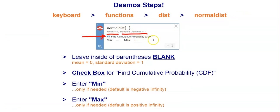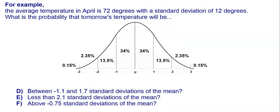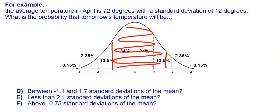Notice that if the range keeps going to the left forever, negative infinity is there by default, and if it keeps going to the right forever, infinity is there by default. So you just have to enter any numbers that aren't negative infinity or infinity. Going back to our example of between negative 1.1 and 1.7, we can have Desmos find this area very simply.